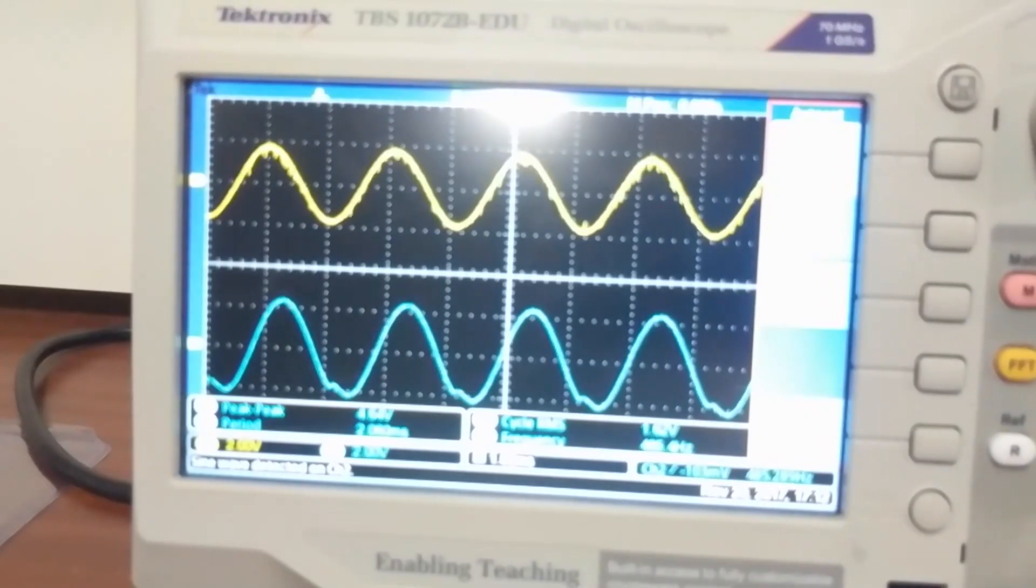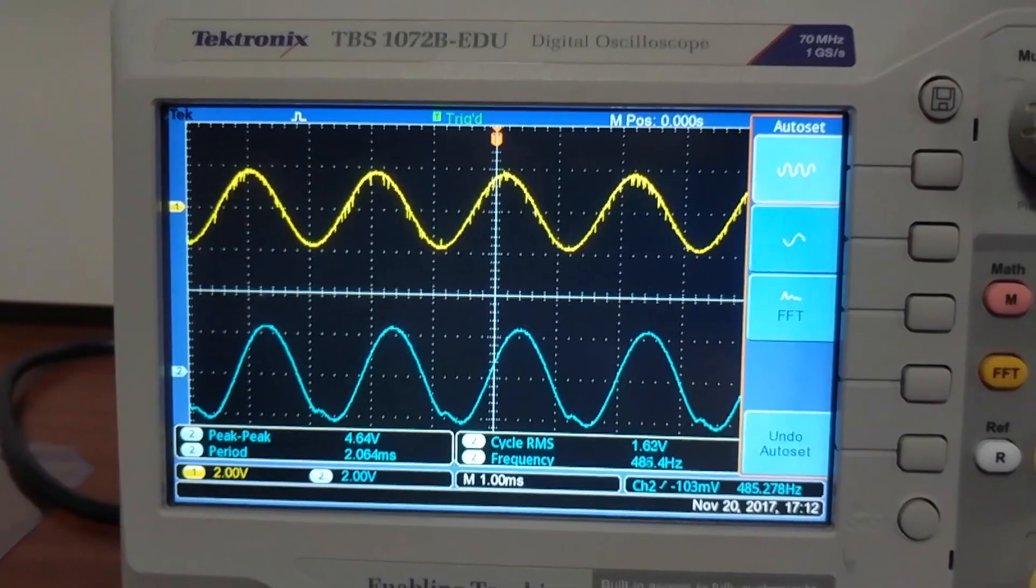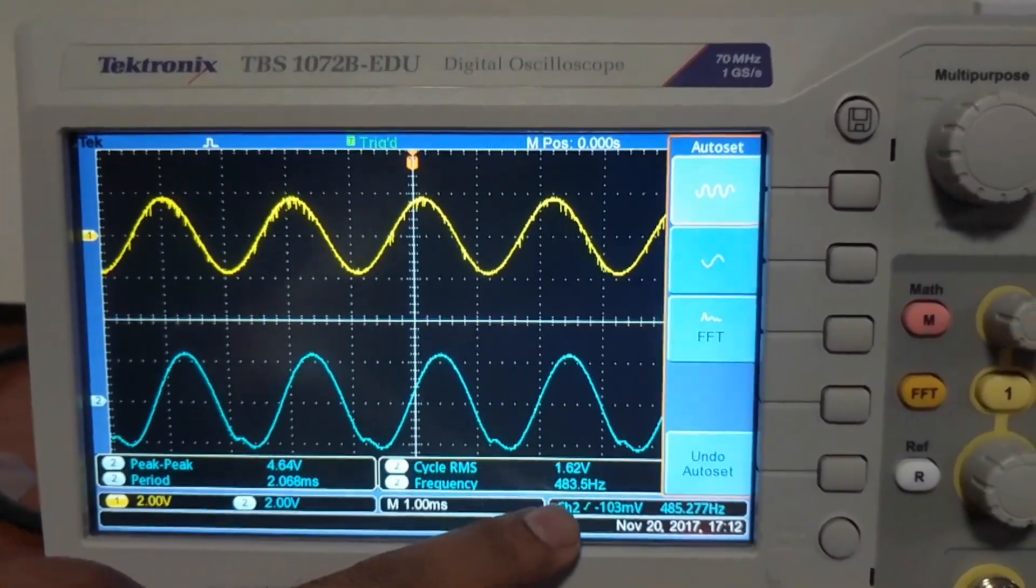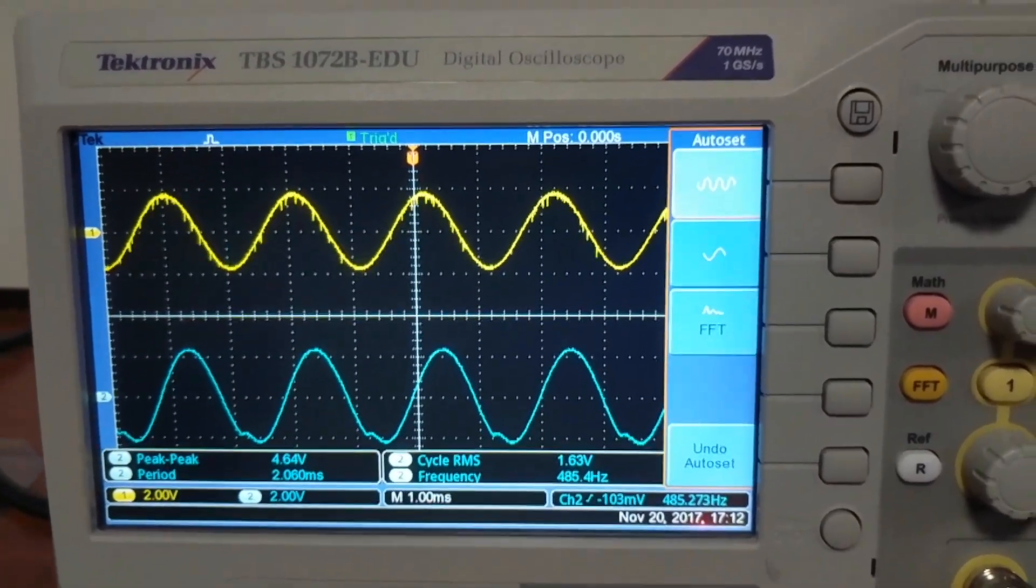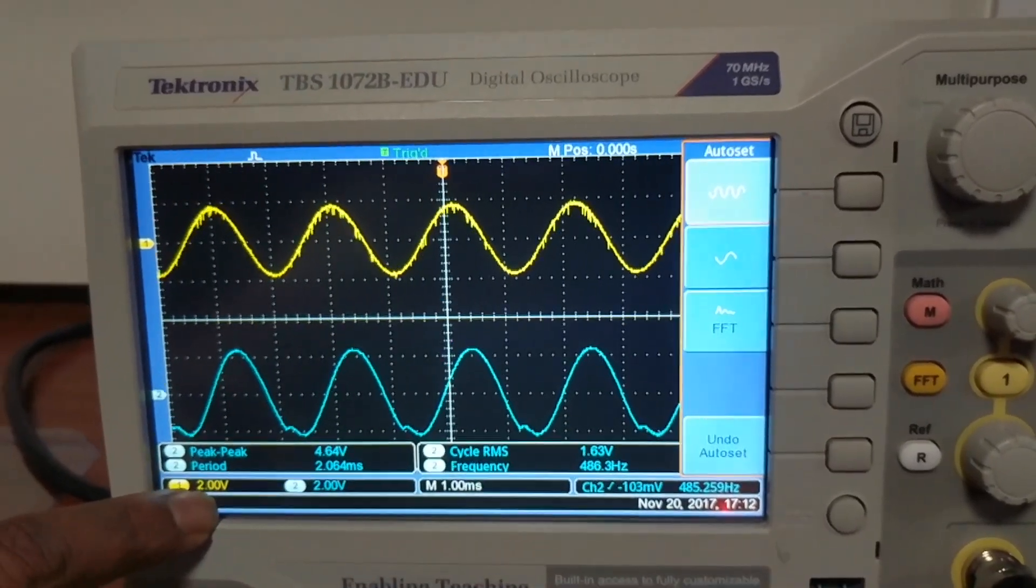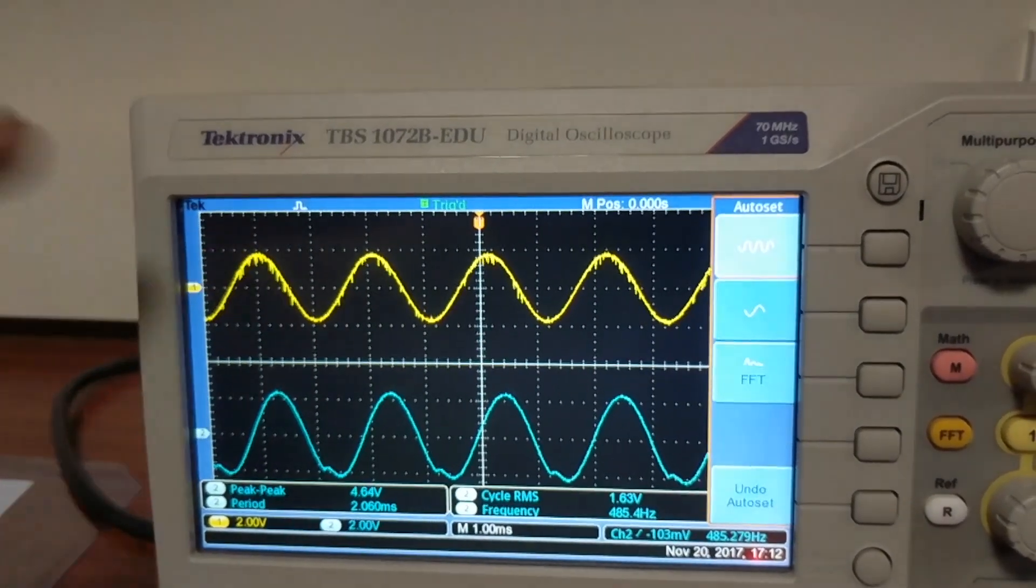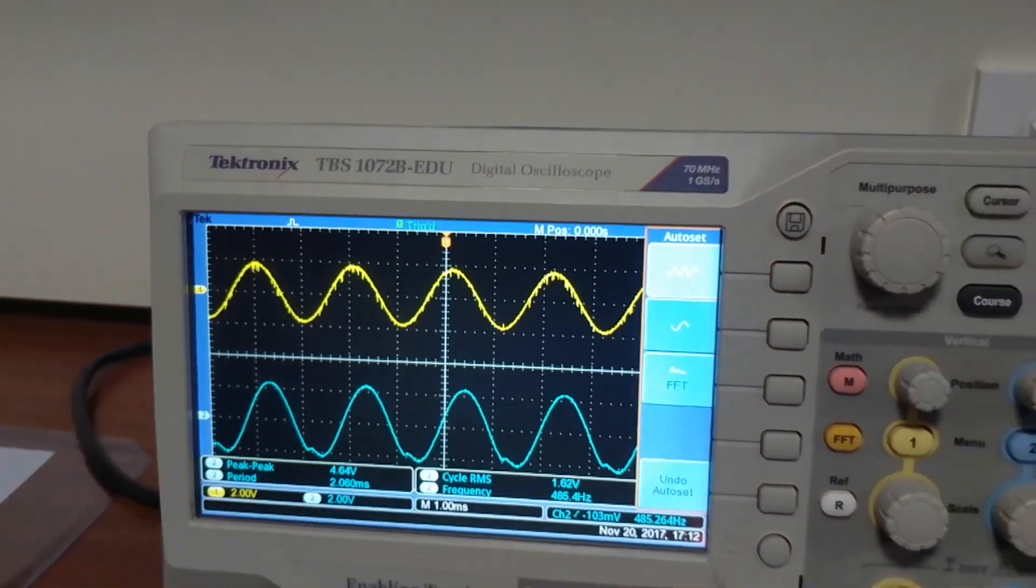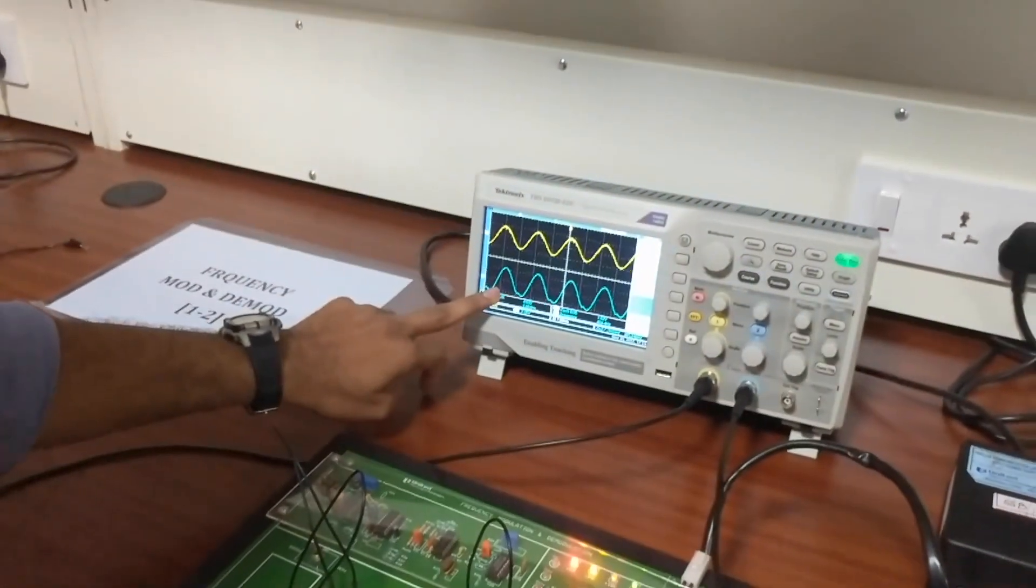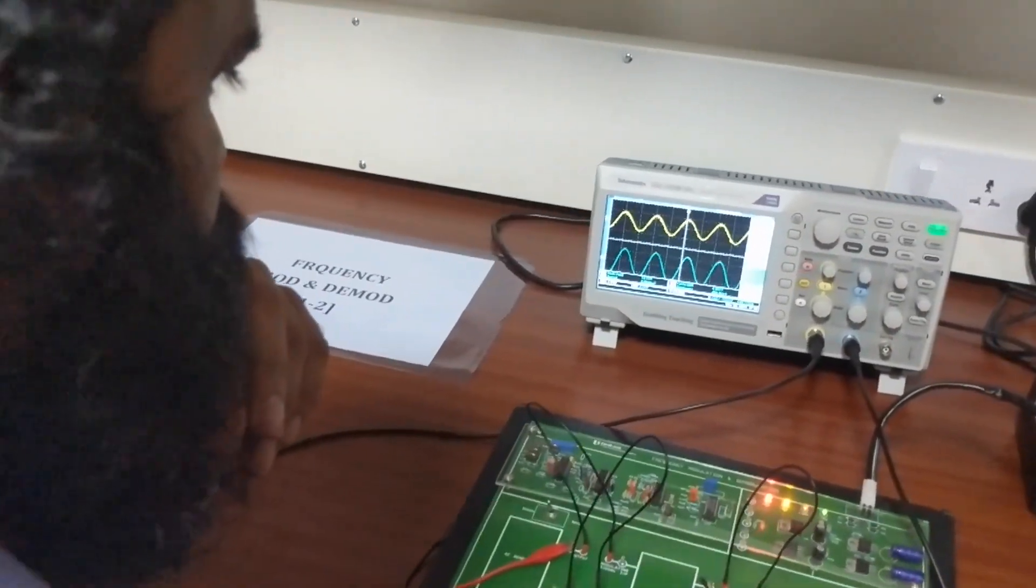So the frequency remains same and the amplitude also will be same. So input frequency is 500 Hertz, the output frequency is also same. You can see here this is showing one box is two volt pins. This is also in two volt, so it's two boxes, two into two is four volt. So four volt amplitude, 500 Hertz frequency input. You are getting the output four volt, 500 Hertz.